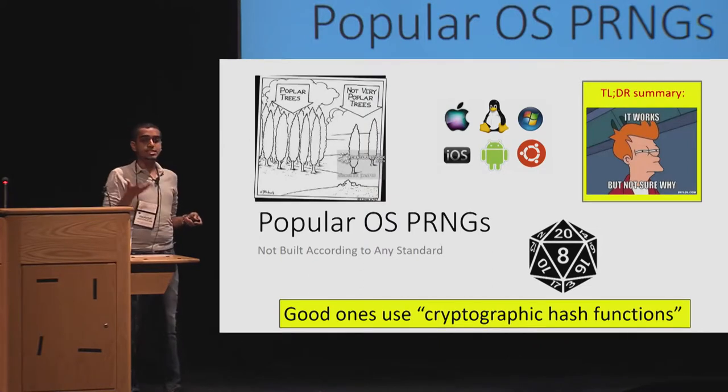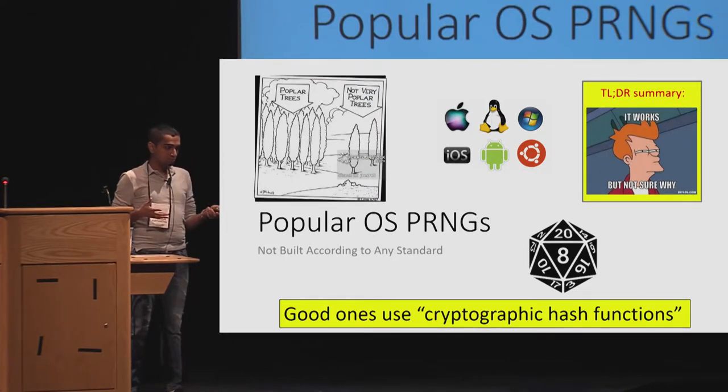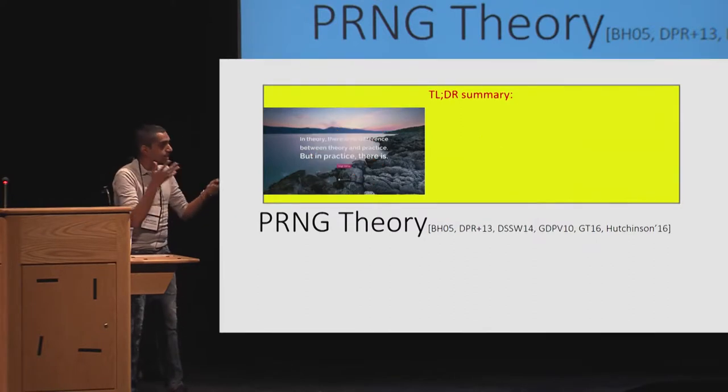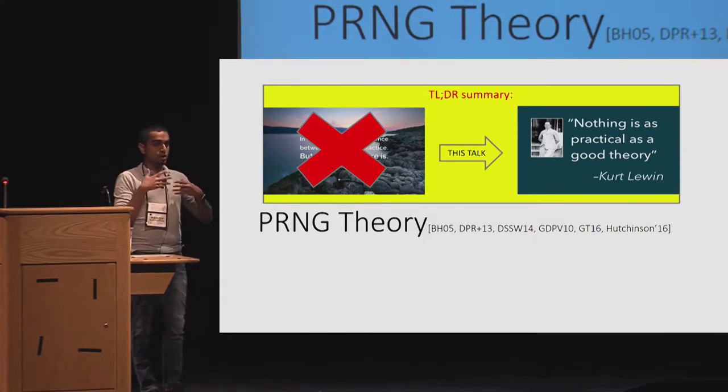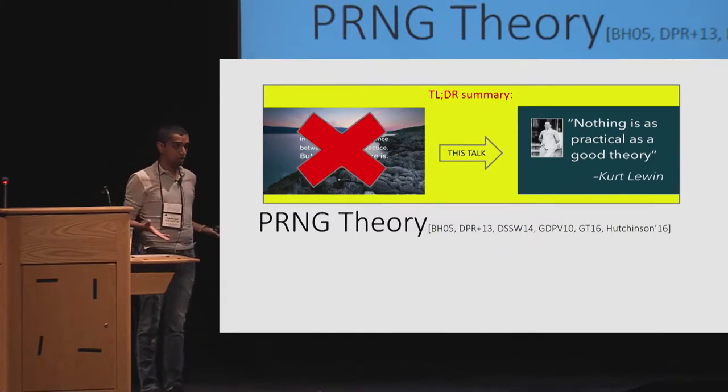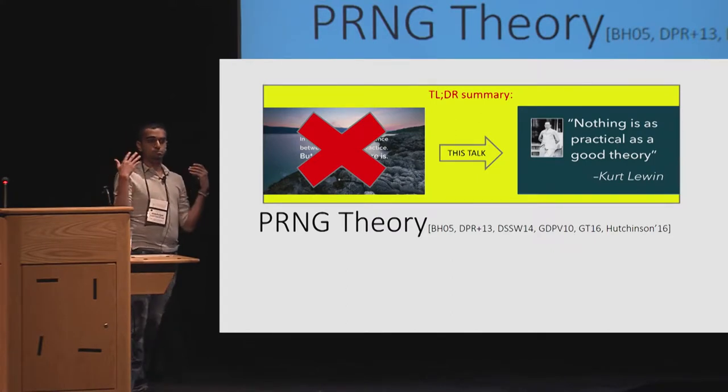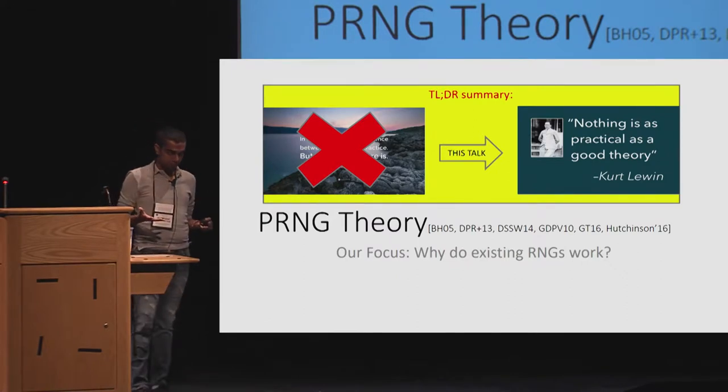This is the state of PRNG in practice. So let's take a look at PRNG theory. The story is that PRNG theory is largely divorced from practice. There are existing theory, but they don't exactly analyze models in practice. The goal of this talk would be to propose this movement towards looking at these constructions in practice from a theoretical vantage point. More formally, our focus is why do existing RNGs work?